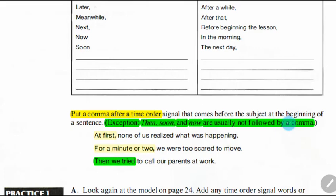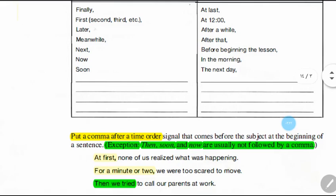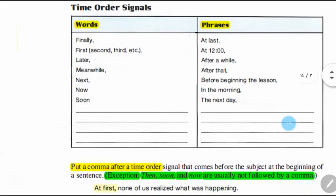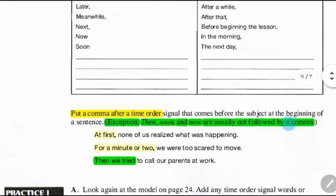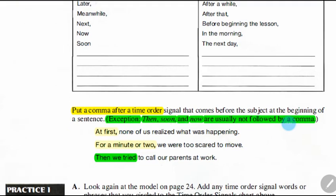An important point: put a comma after time order signals that come before the subject at the beginning of a sentence. When we use words like finally, first, later, or meanwhile at the beginning of a sentence, we have to put a comma after them and before the subject. However, there is an exception: then, soon, and now are usually not followed by a comma.